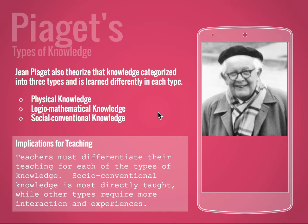The logico-mathematical knowledge is the relationships that are constructed in our minds between objects or concepts. This is something that is not visibly observable — you can't watch someone because it happens in their brains. So logico-mathematical knowledge is the workings of our mind when we're trying to figure something out.